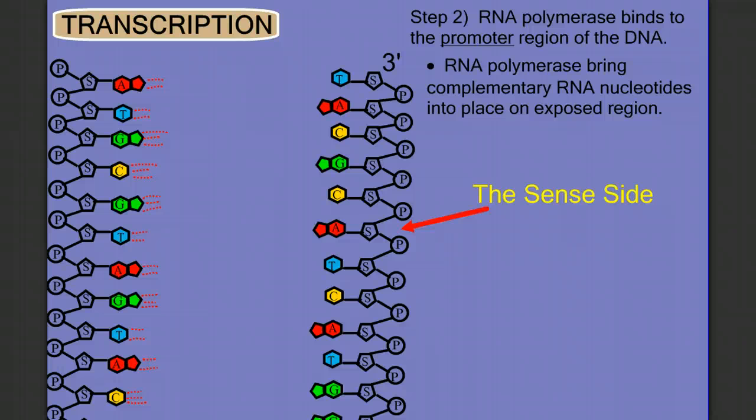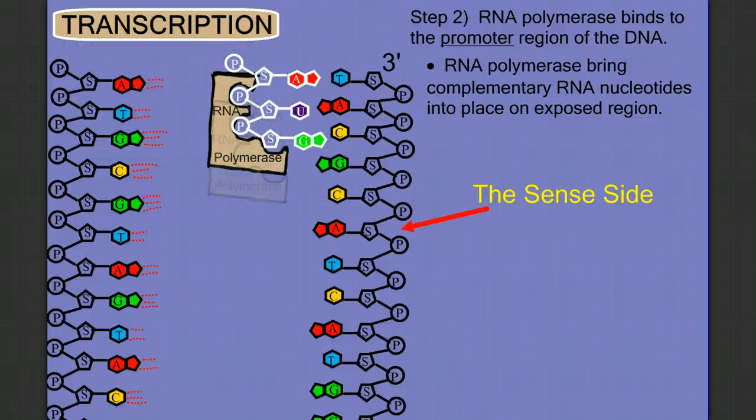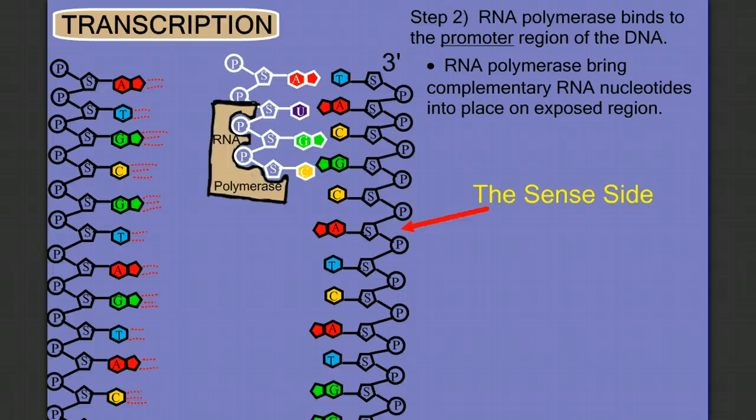The enzyme that's responsible for this construction is called RNA polymerase. RNA polymerase polymerizes RNA strands. It brings in complementary RNA bases, A's opposite T's, U's or uracils opposite adenines, guanines opposite cytosines, and cytosines opposite guanines.